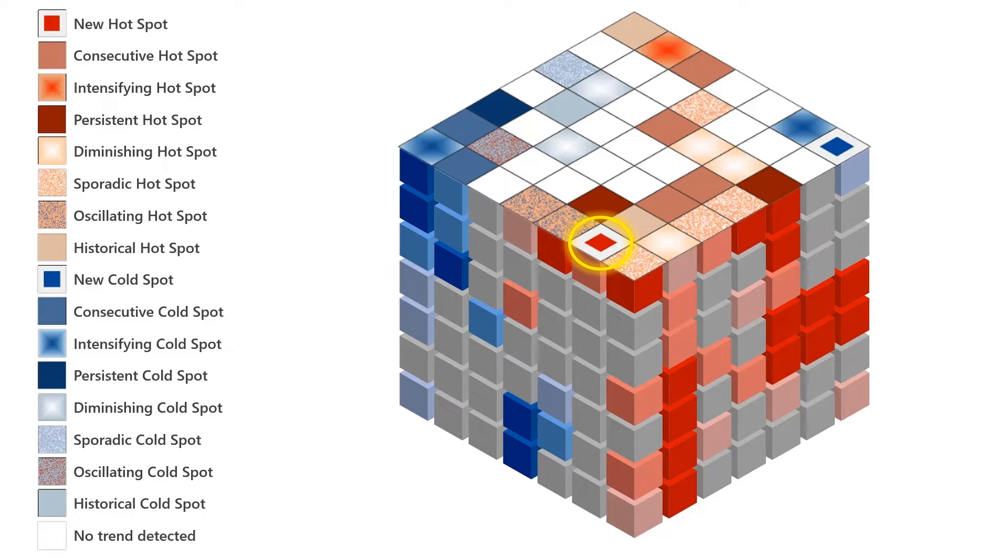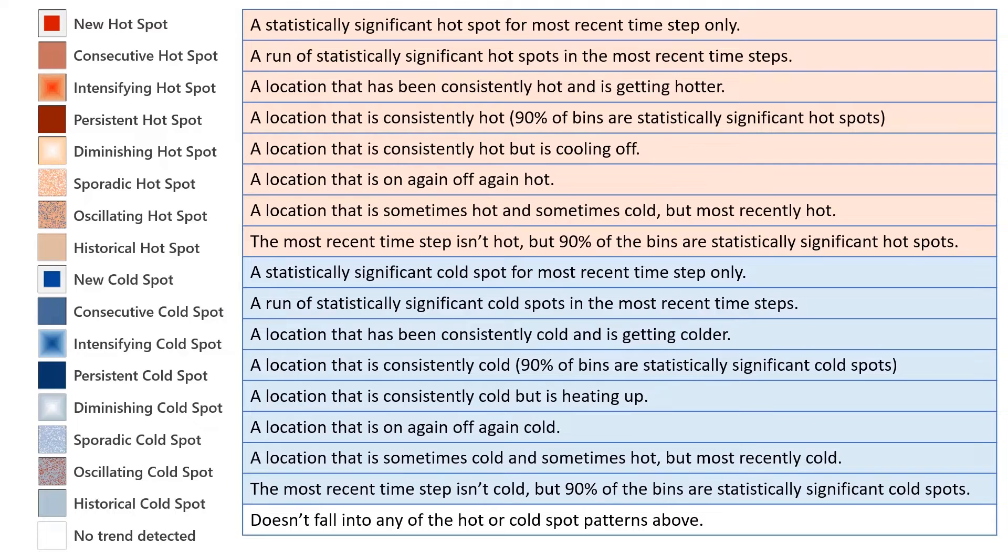For the next door column, if you look from the bottom to the top of the column, you can see that the location isn't a statistically significant hotspot until the most recent time period at the top of the cube. This type of trend is classified as a new hotspot. For this column, the values are sometimes cold and sometimes hot. Since the most recent time period is hot, the location is classified as an oscillating hotspot. If the most recent time period was cold, it would have been classified as an oscillating cold spot. Each of the emerging space-time patterns is listed and described here in the handout and also in the tool documentation, and this many categories is definitely overwhelming, but in most cases, you'll probably only be interested in a couple of these.